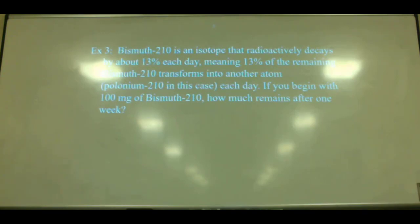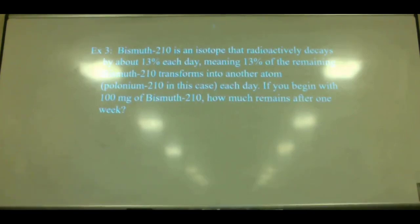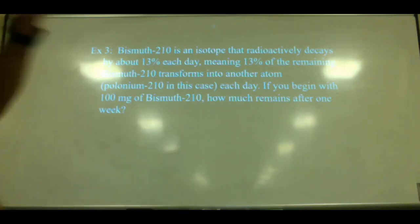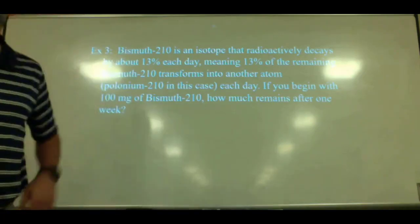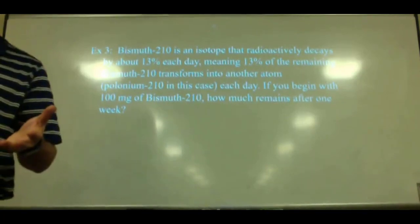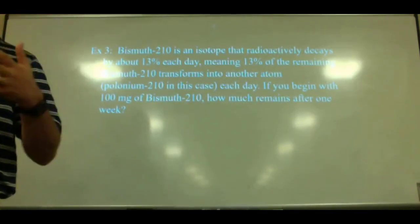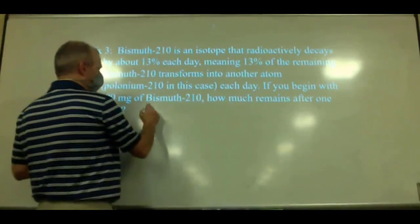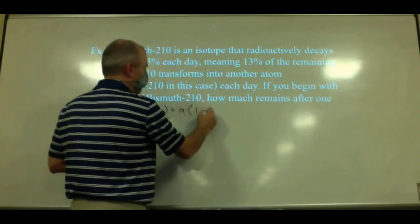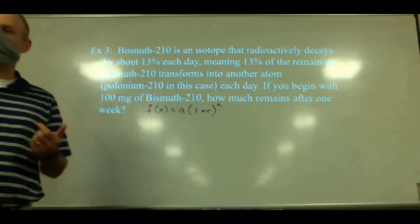Bismuth-210 is a radioactive isotope that decays by 13% each day — meaning 13% of the remaining bismuth-210 transforms into polonium-210 each day. If you begin with 100 milligrams, how much remains after one week? We write the equation f(x) = a times (1 + r) to the x power. This time it's decay, so r is negative. We subtract: the decay rate 13% as a decimal is 0.13.